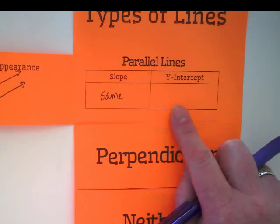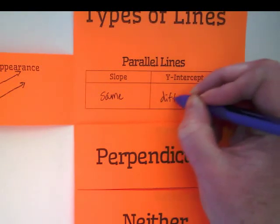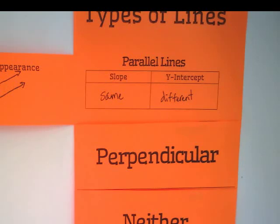But what was different about the y-intercept? It was lower. It's a different y-intercept. And so as we were dealing with the equation, you might have like y equals 2x plus 3 and y equals 2x plus 9.